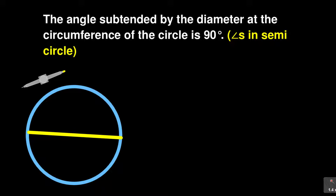That particular line — let us call that line A, B. Now it's a special line. If it's passing through that center, we call that line the diameter. So they are saying the angle subtended by the diameter. You are moving from A, going to the circumference of a circle — the angle subtended by the diameter at the circumference — from the circumference, then go to B.